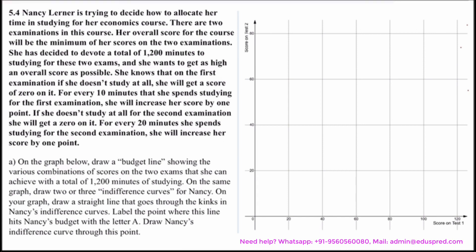On the x-axis we have score on test 1, and on the y-axis we have score on test 2. The question asks us to draw the budget line. Here, Nancy does not have any allocated money, but she has time which she is considering as her income, and she has to budget that time into two subjects. If you consider the budget line to be in the form where expenditure equals income, then here her expenditure on each subject should equal her total available time.